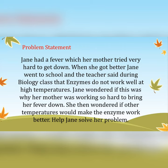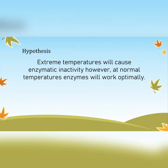The first thing we want to do is get our hypothesis. If you don't know how to do that, you can check out my video on how to ace your hypothesis. The hypothesis I'm working with is: extreme temperatures will cause enzymatic inactivity; however, at normal temperatures enzymes will work optimally. Basically, at extremely hot or extremely cold temperatures enzymes will not work, but at normal temperatures they should work normally.